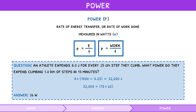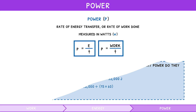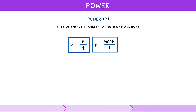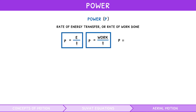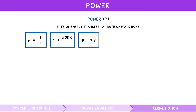But what if a problem gives you the force of an event and not the energy or work done? Assuming the object moves in the direction of the force, the power is the force times the speed of the object. Like work and energy, assume that power transfer is perfect in every problem unless asked about the power transfer efficiency, which is defined as the ratio of useful power out to total power in.